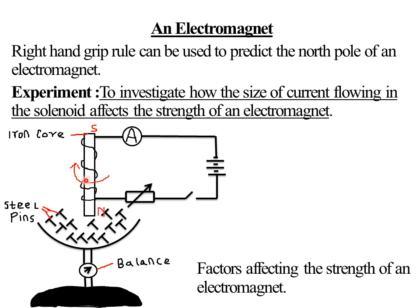We can determine the polarity of the electromagnet using the right-hand grip rule. The current flows from the positive terminal in this direction. If you curl your fingers in the direction of the current winding of the coil, the thumb points in the direction of the north pole. So the thumb always points in the direction of the north pole.